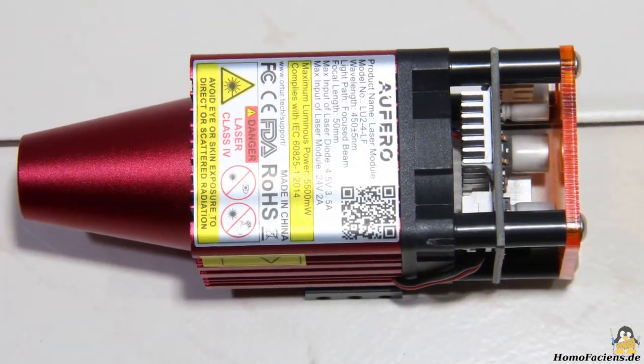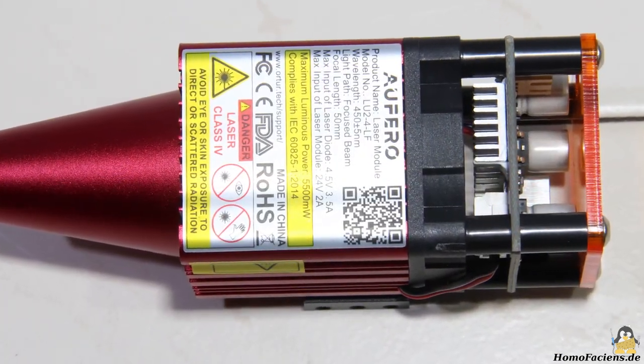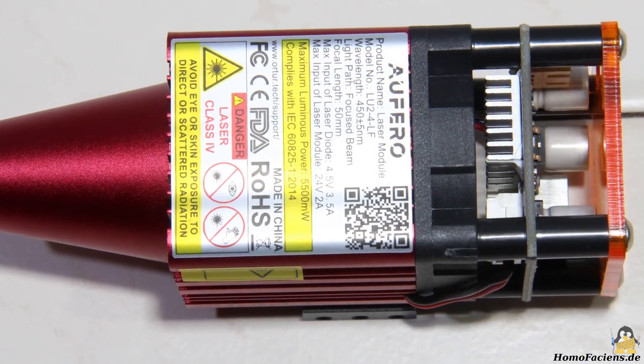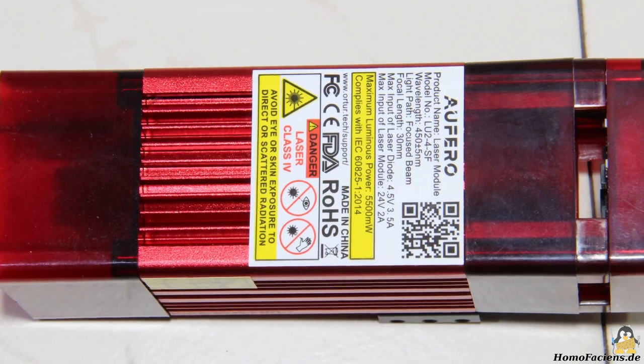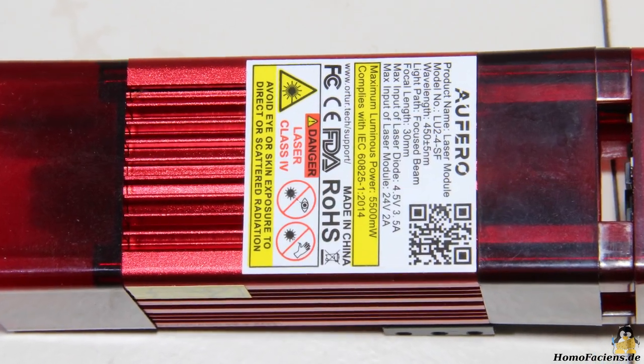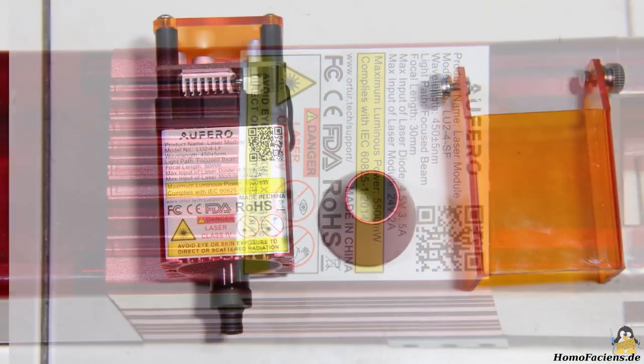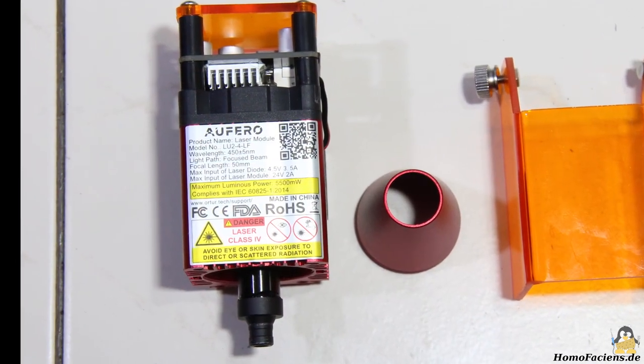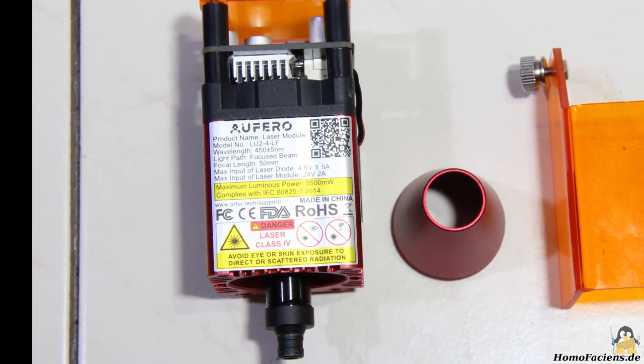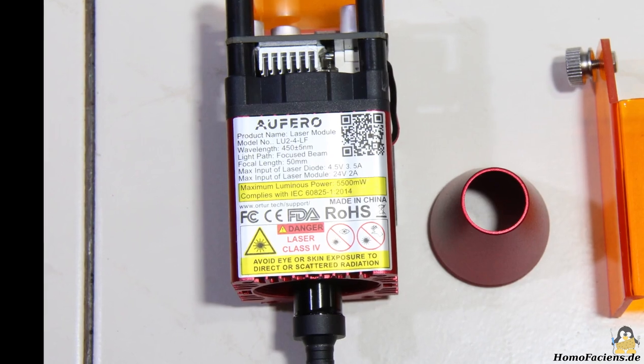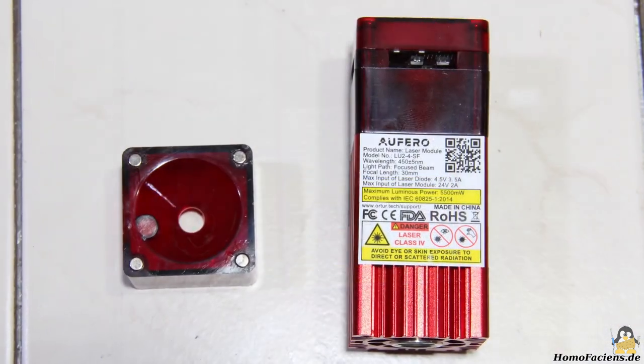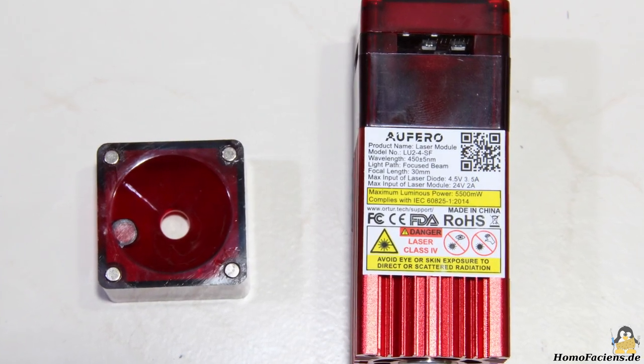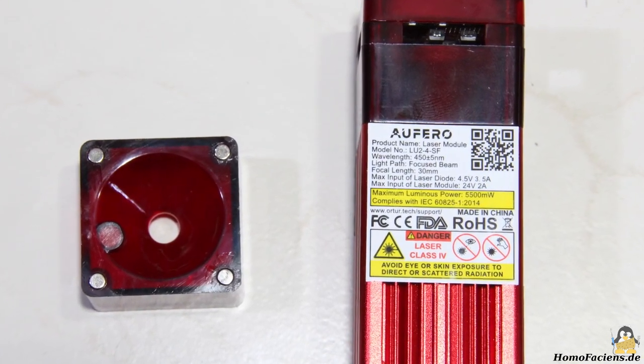The two more powerful modules have diodes with an electric input power of around 16W at a laser output power of 5.5W. The focal length of the two modules is different. Type LU-2-4LF for long focus has a focal length of 50mm like the first module, while with the type LU-2-4SF for short focus it is only 30mm.